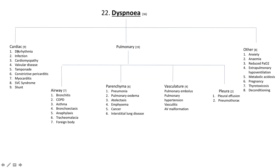Cardiac possible causes of dyspnea include dysrhythmia — notably tachyarrhythmias — infection in the way of infective endocarditis, myocarditis, pericarditis, cardiomyopathies (both dilated and hypertrophic, as well as restrictive), valvular disease, tamponade, constrictive pericarditis, myocarditis, superior vena cava syndrome, and of course shunt.